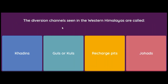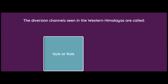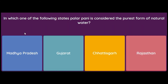The diversion channels seen in the Western Himalayas are called — Khadins, Guls or Kuls, Recharge Pits, or Jhods? The answer is Guls or Kuls, which are irrigation channels found in the Western Himalayas.